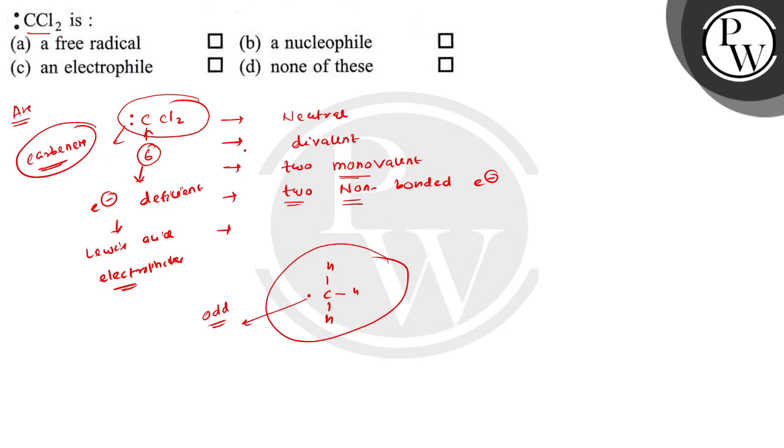So the correct option is dichlorocarbon is an electrophile. Option C is correct. I hope you understood well, best of luck.